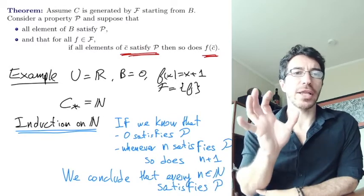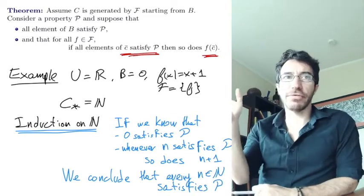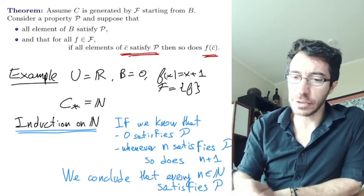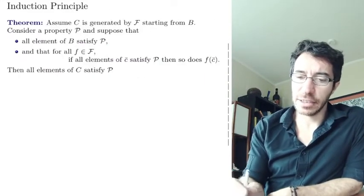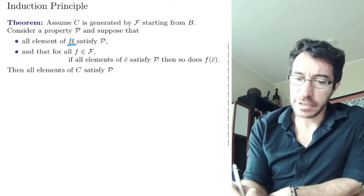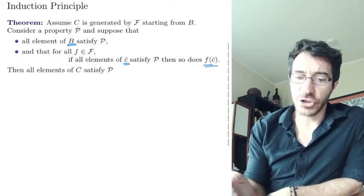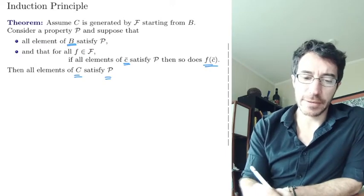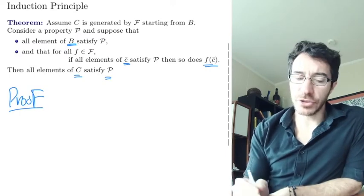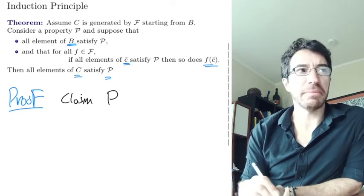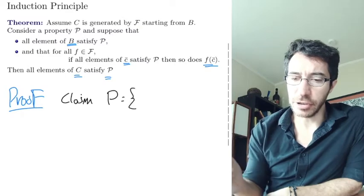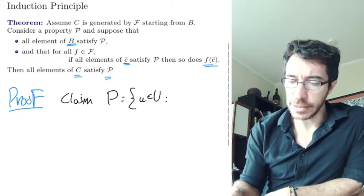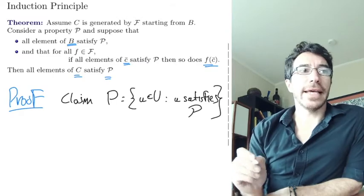Now we're going to do it in the general case of a closure of a bunch of functions starting from a bunch of elements. The general statement: all elements of B satisfy P, and if c does, so does f(c) for all the functions in our family. We want to show that everybody in C satisfies P. The claim is that the set — let's call it roman P — the set of all elements u in our universe that satisfy P, is inductive.